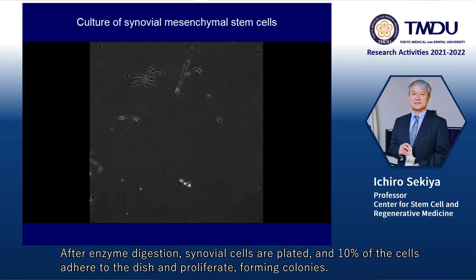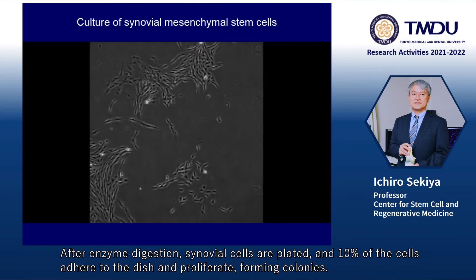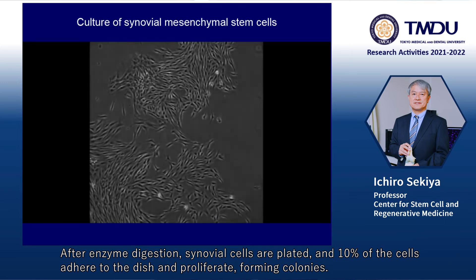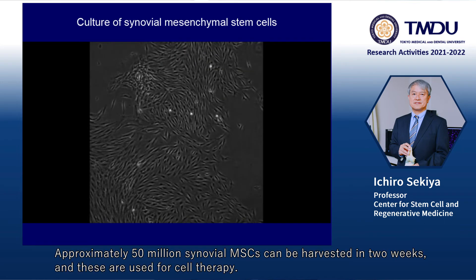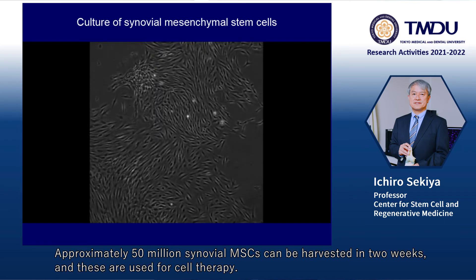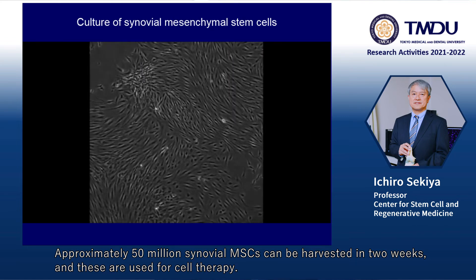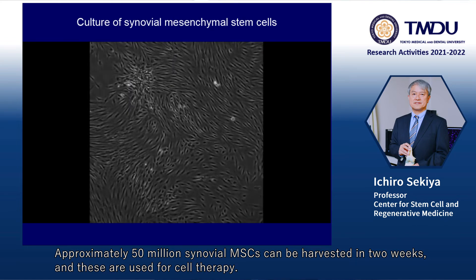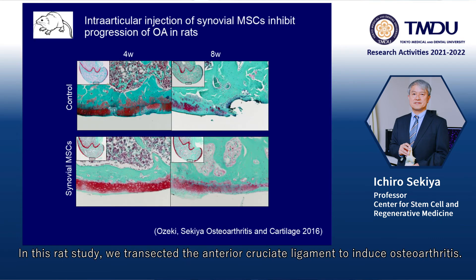After enzyme digestion, synovial cells are plated and 10% of the cells adhere to the dish and proliferate, forming colonies. Approximately 50 million synovial MSCs can be harvested in 2 weeks and these are used for cell therapy.